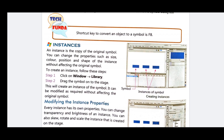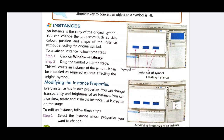To create an instance, follow these steps: click on the Window menu, go to the Library option, and drag the symbol onto the stage. This will create an instance of the symbol. The instance can be modified as required without affecting the original symbol.